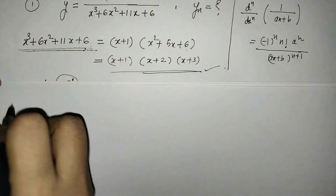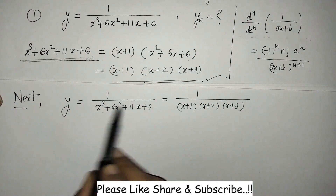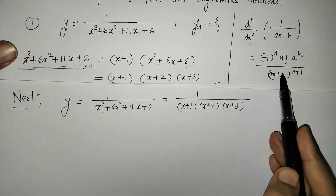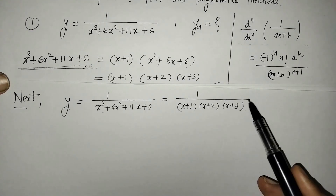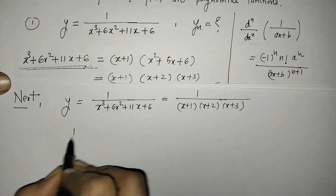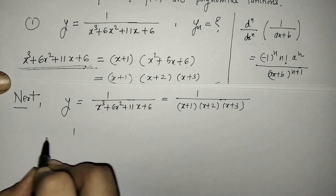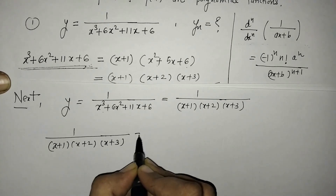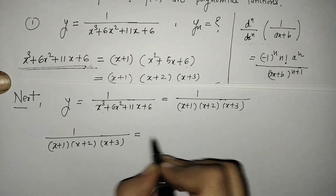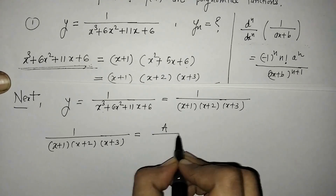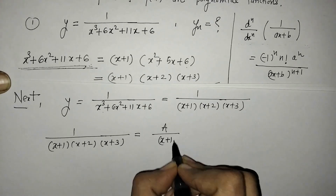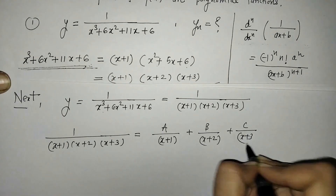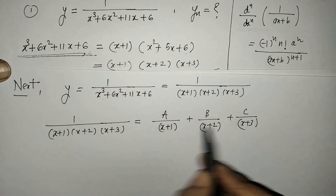Now we write the given function in terms of these linear factors. To apply the standard formula we have to write the given function in partial fractions. All these factors are linear and non-repeated, so we take three constants a, b, c and write: a/(x+1) + b/(x+2) + c/(x+3). We need to find the values of a, b, and c.